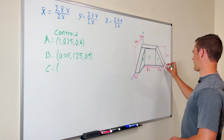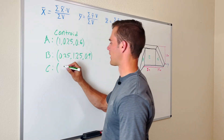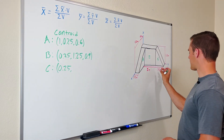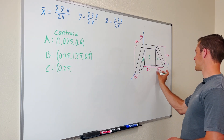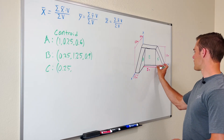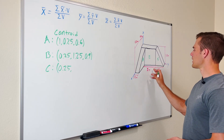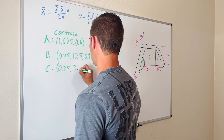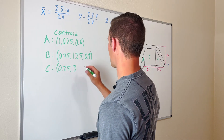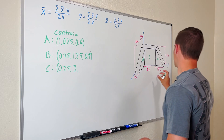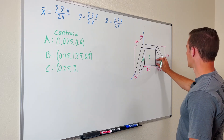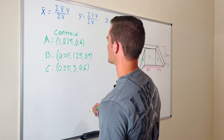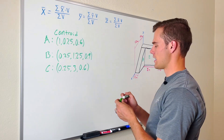Finally for C: its centroid in the x direction is half of its width, so 0.25. In the y direction it's one third along its base — the base is 1.5 meters, so 0.5 — plus the width of B which is 2.5, giving 3.0. One third along its height is the same as A at 0.6. So there are the coordinates of the centroids of each component part.